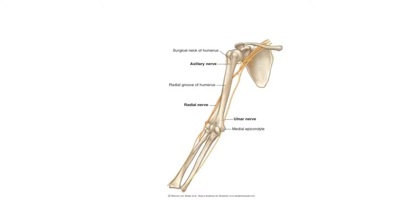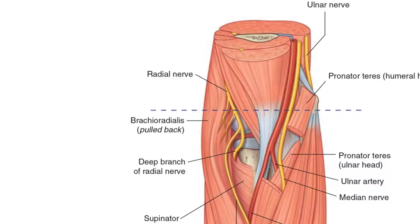The median nerve arises by two roots from the lateral and medial cords of the brachial plexus, then descends in the arm and forearm. In the cubital fossa, it is separated from the ulnar artery by the deep head, or ulnar head, of pronator teres muscle.